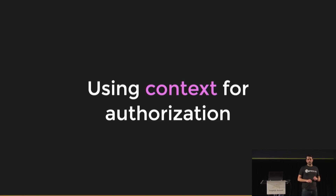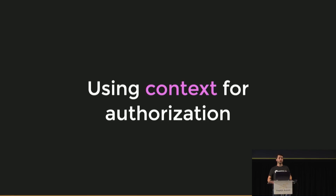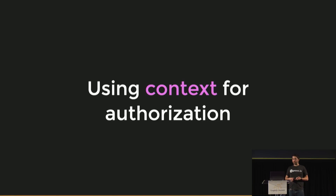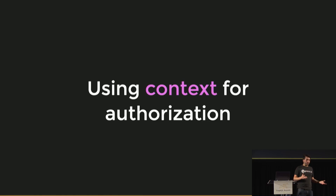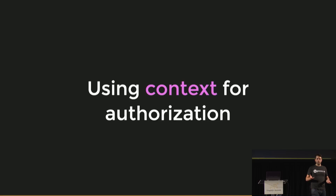Getting to the way to use directives that I really like — authorization-related tasks. When you're defining a new resolver, you get the context, which talks about the request itself — things like any headers that might exist on it. Wouldn't it be cool if we could use that to have a directive that checks for authorization information? I'm going to show you a way you might do this using JSON Web Tokens.